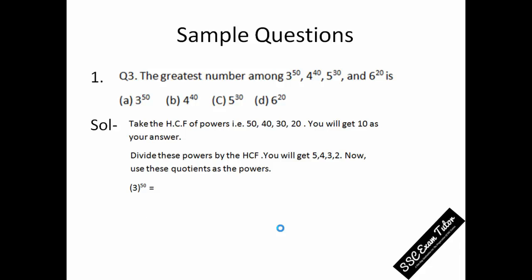For example, we have 3 to the power 50. Dividing 50 by 10, we got 5, so put 3 to the power 5 and simplify it—you will get 243. Similarly, we have 4 to the power 40, so dividing 40 by 10, you get 4, so 4 to the power 4 is equal to 256. Similarly, for 5 to the power 30, you will get 125, and for 6 to the power 20, you get 36.